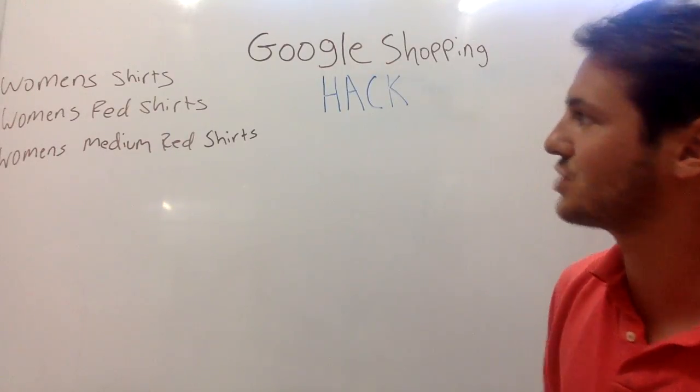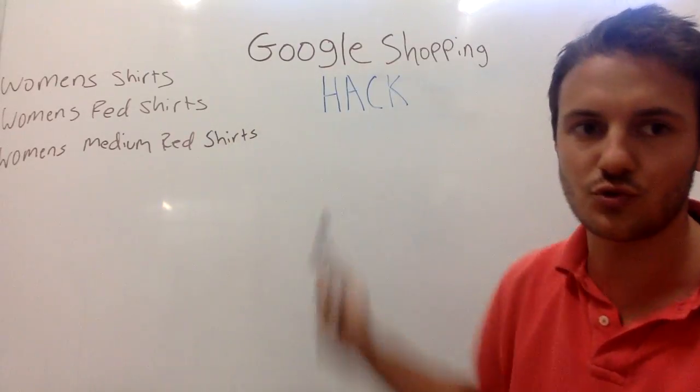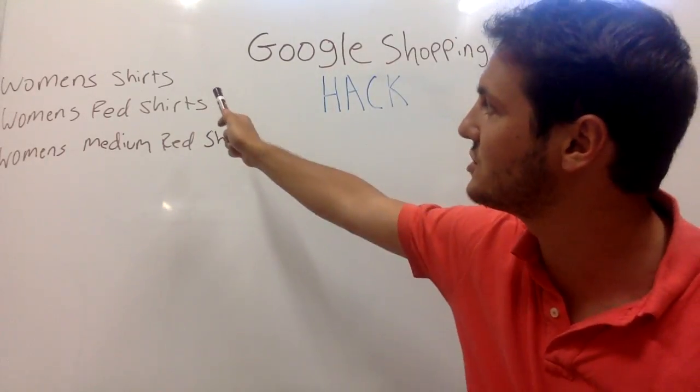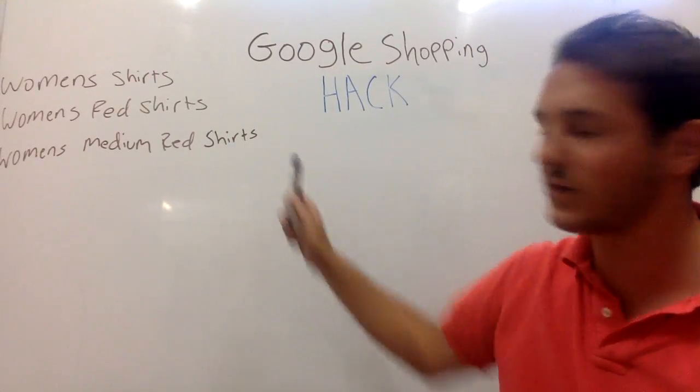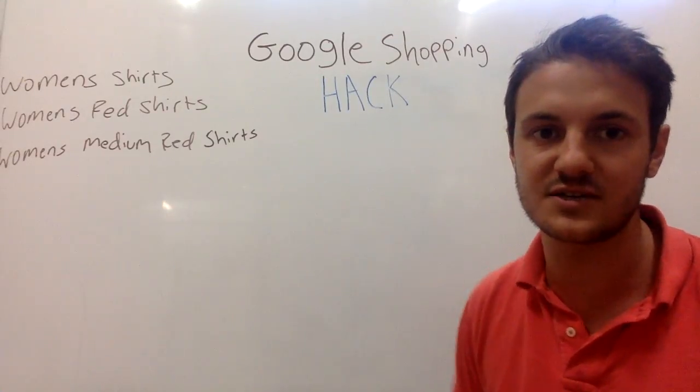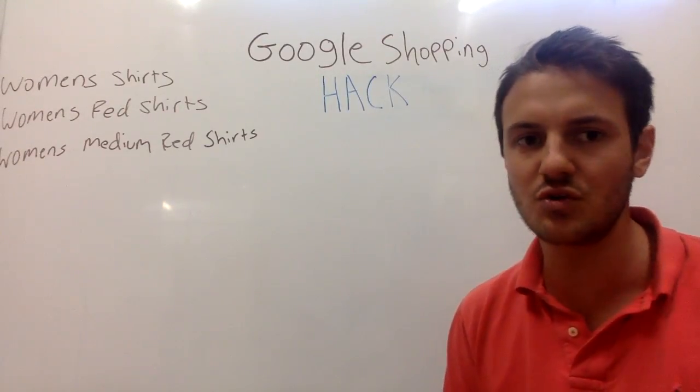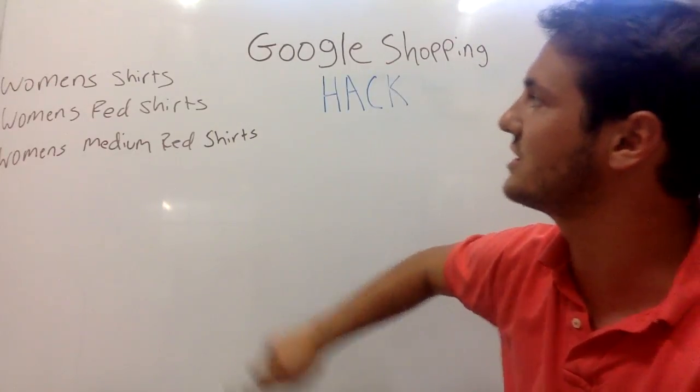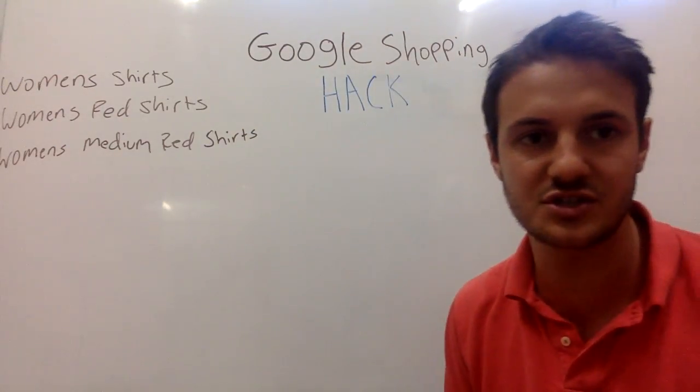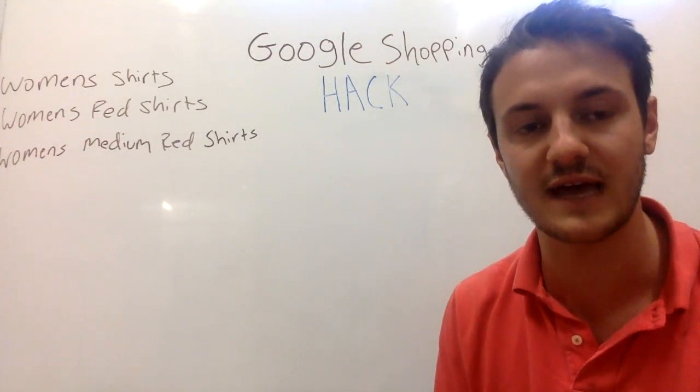Currently when you have a Google Shopping campaign, you can't control your bid. So if someone's typing in women's shirts or women's medium red shirts, which is more closely related to the product you actually sell, you can't increase your bids on women's medium red shirts and decrease your bid on women's shirts. There's actually no way to do that.